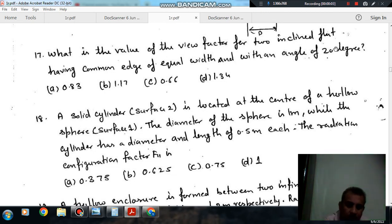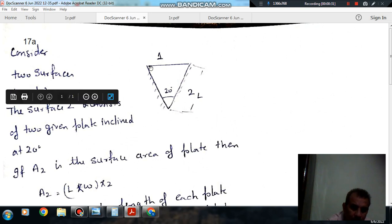Hello, welcome again. We are solving some questions of heat transfer, the topic is radiation. Question number 17 is: what is the value of the view vector for two inclined slats having common edge of equal width and with an angle of 20 degrees?